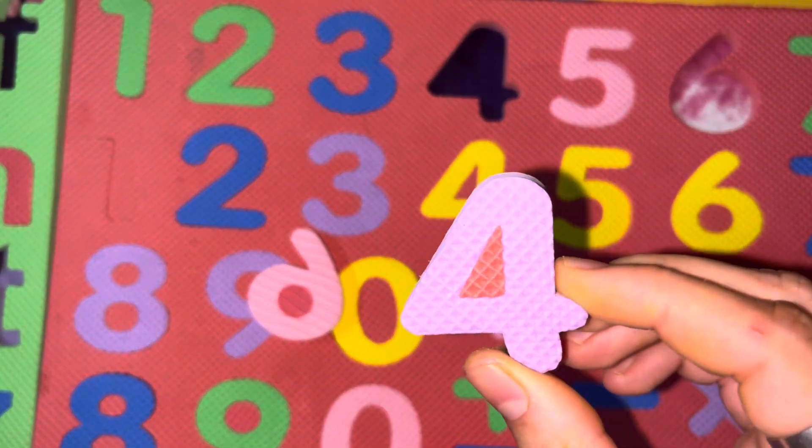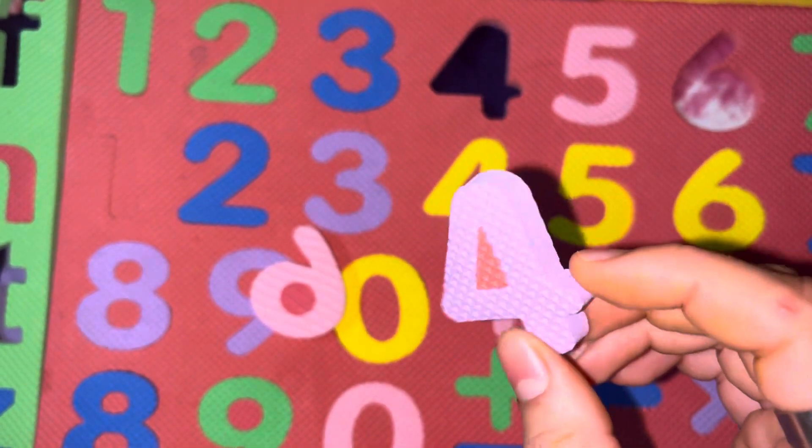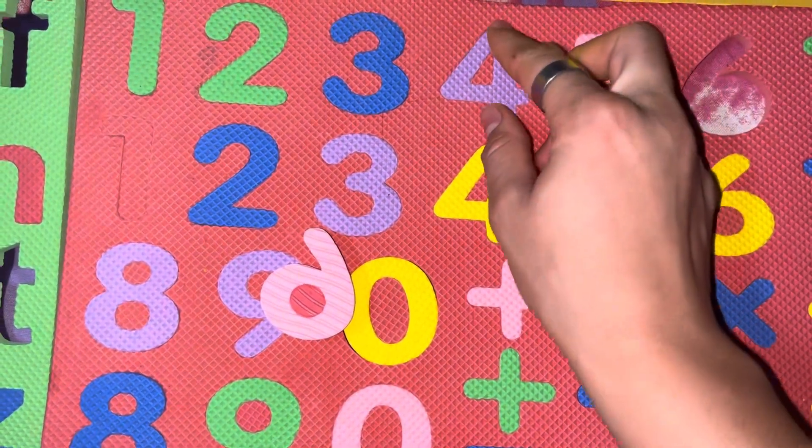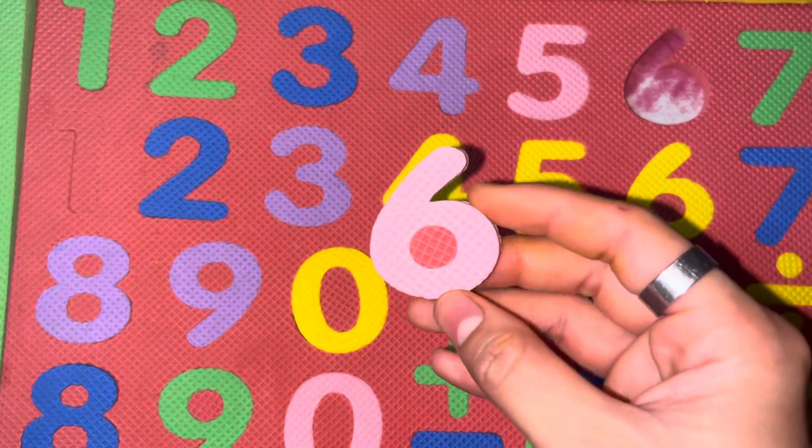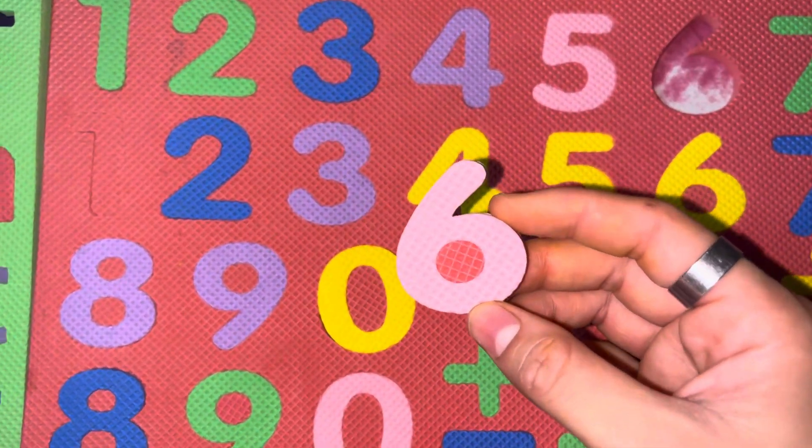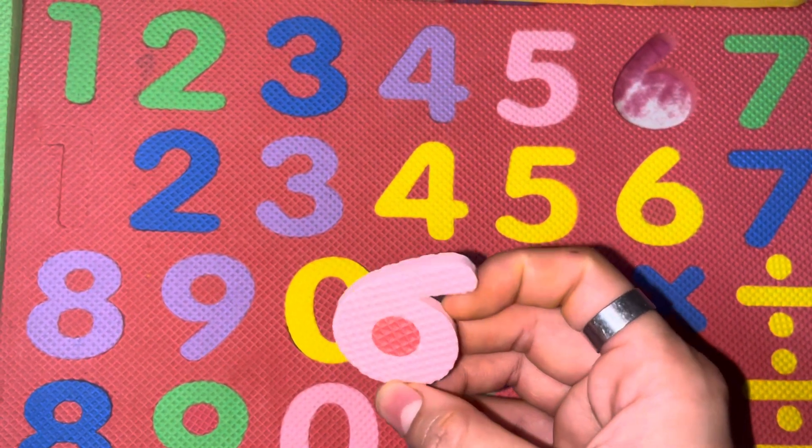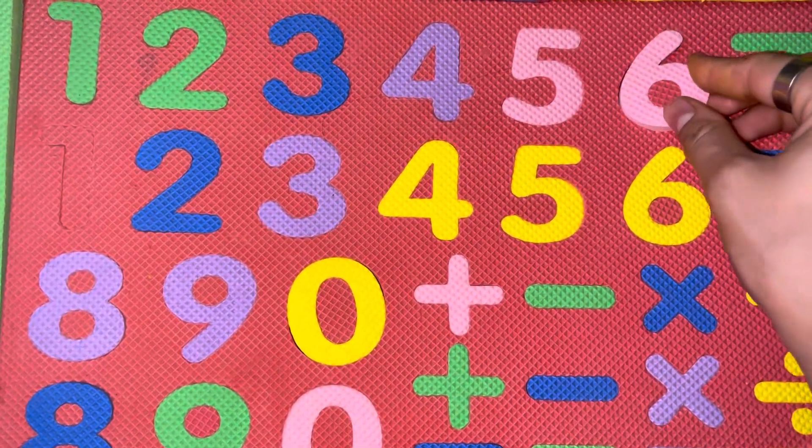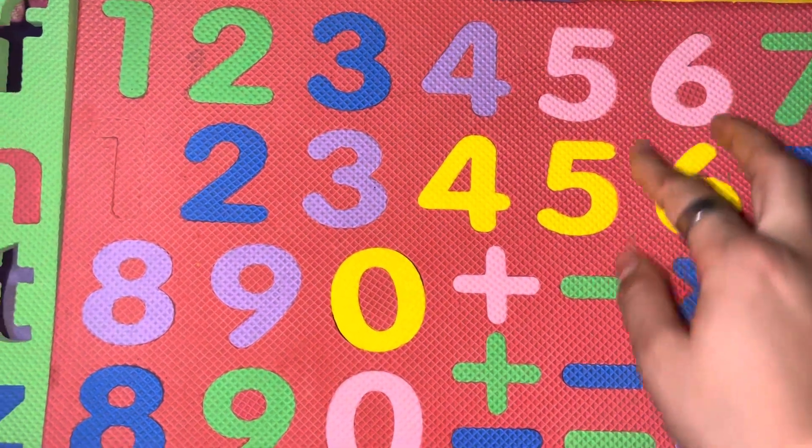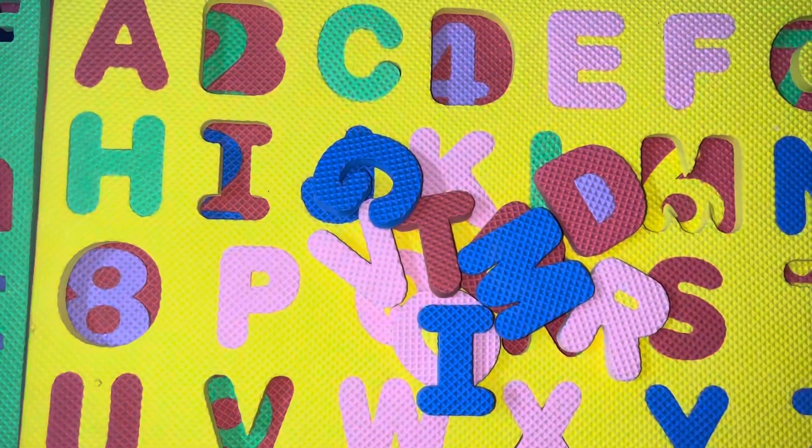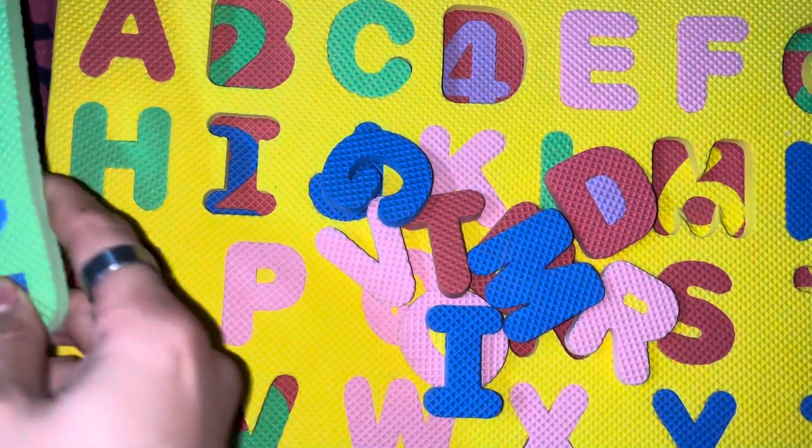Next number is number four. F-O-U-R. Four. Last one is, identify the number. Which number comes between five and seven? Six comes between five and seven. Like, share, and subscribe for number learnings and alphabet learnings. Like the video and share with your friends.